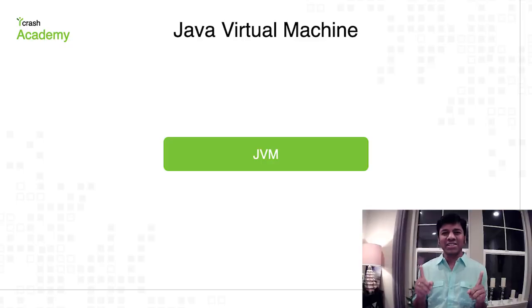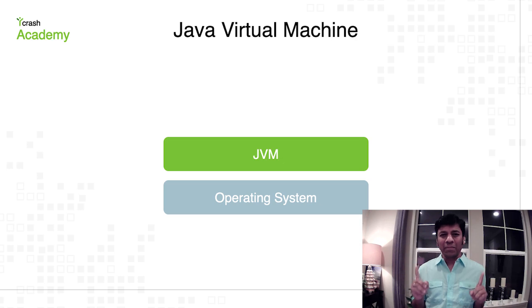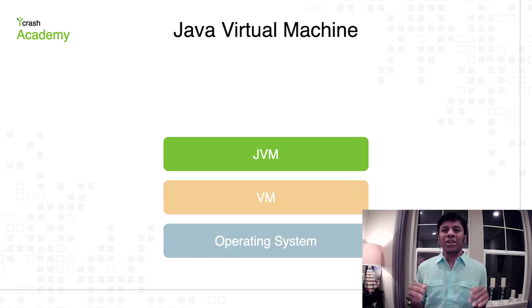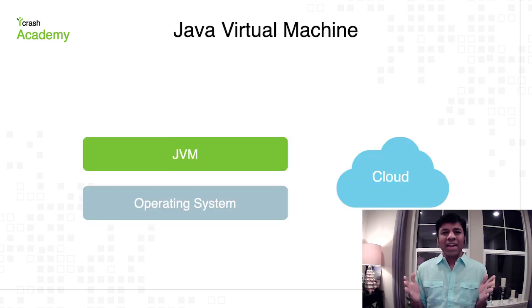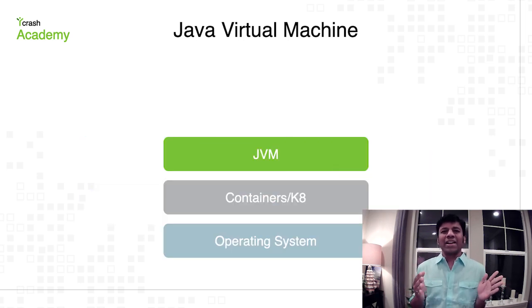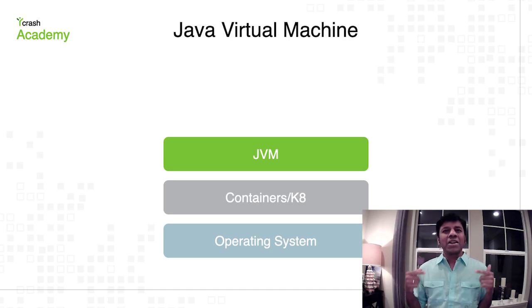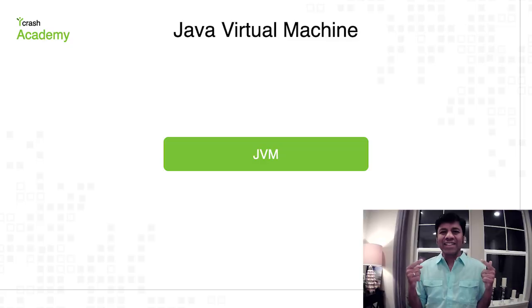Initially, the Java Virtual Machine was running on the bare metal and operating system. From there, it went on to run on a virtualized environment like VMware, and then it was running on the cloud, and now it is running on containers with Kubernetes. So there has been a significant evolution up and below the JVM. Let's see what is happening above the JVM.